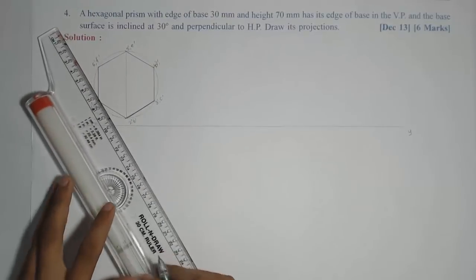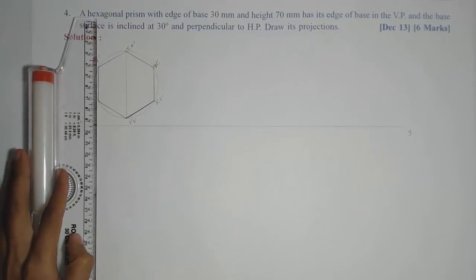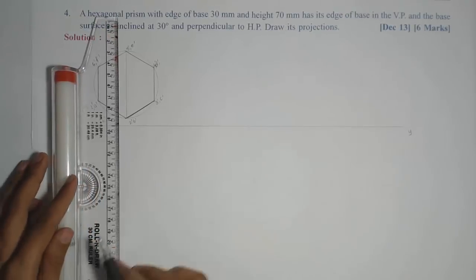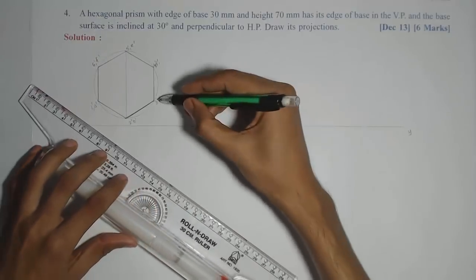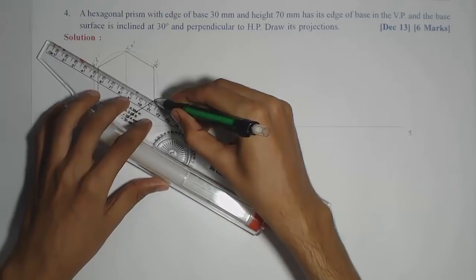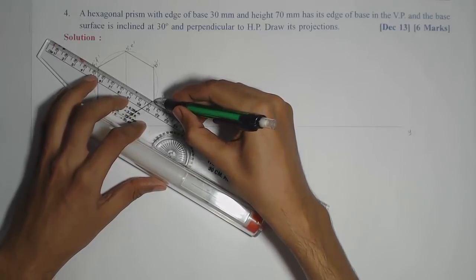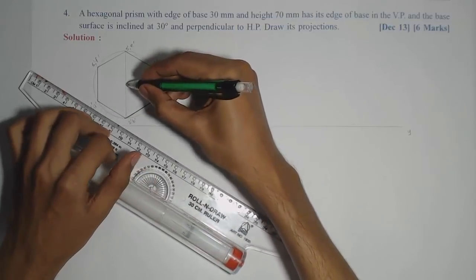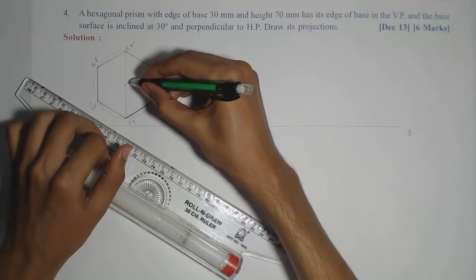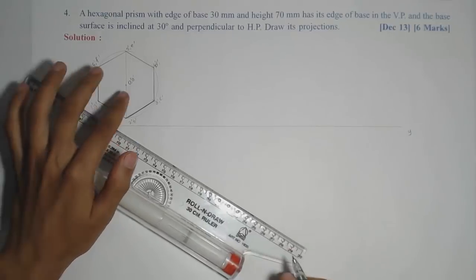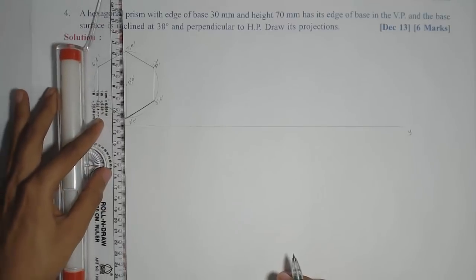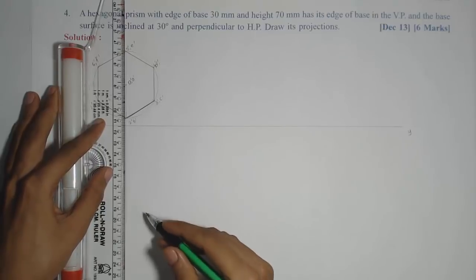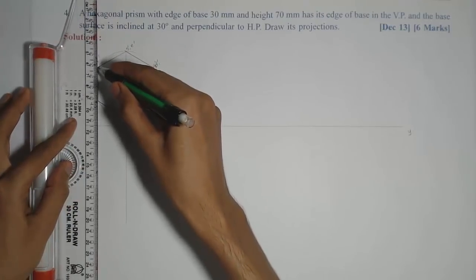Now I need to draw the top view, which will be a rectangle with axis height 70 mm. So I will project the axis first. To mark the axis in the front view, I will draw one more diameter for that circle. Here no need, because obviously we are going to get the center of the circle as the axis. So O dash O dash can be marked as axis. Now I will project all the corners — first the axis in the top view and then the remaining corners and edges.